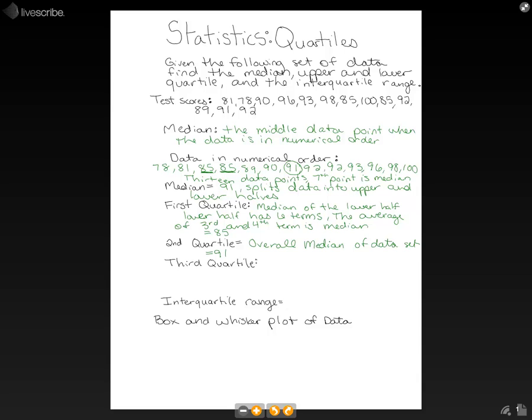Our third quartile is just going to be the median of the upper half of the data. Because it is the median of the upper half, it has six data points. Therefore, we're going to have the third and fourth point of that group average out to be our third quartile.